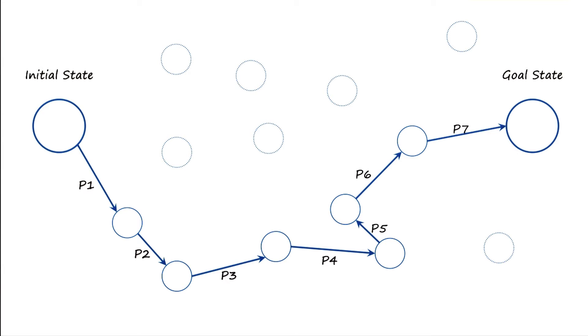The question then becomes, how might an AI agent derive this path that may take it from the initial state to the goal state?